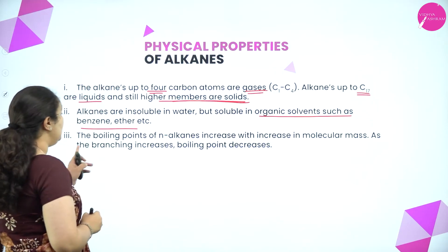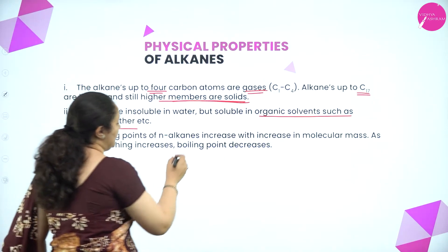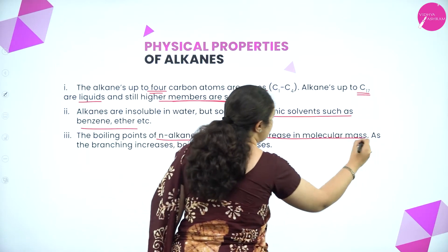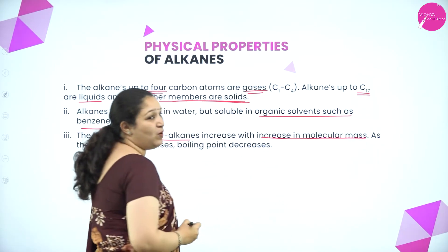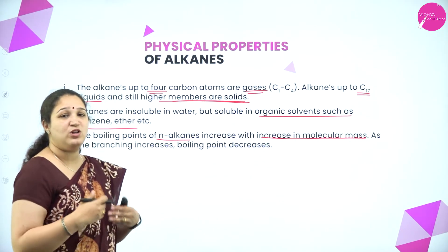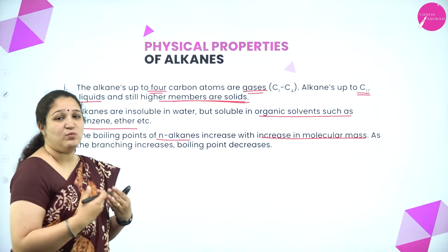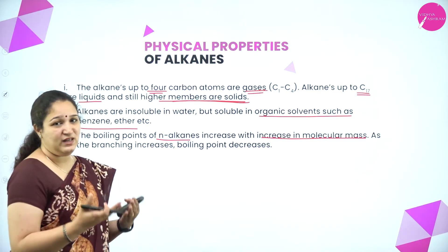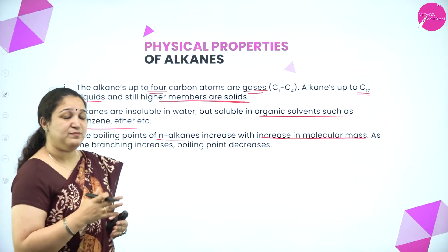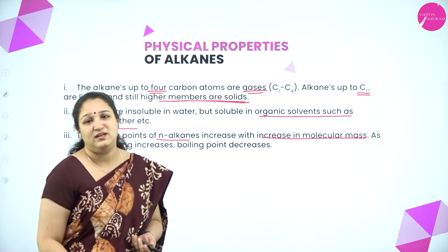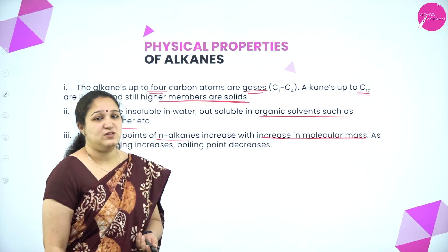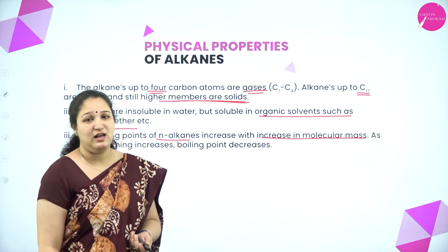Alkanes are insoluble in water but soluble in organic solvents like benzene and ether. The boiling point of straight-chain (n-)alkanes increases with increasing molecular mass. However, if there is branching, the boiling point decreases. These are the physical properties of alkanes.